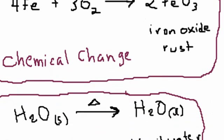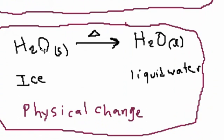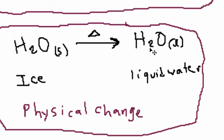Let me show you an example of a physical change. Here we have water in its solid state — ice — and this triangle means heat, so if we add heat to ice, the ice turns into liquid water. Notice that you have H₂O on the left-hand side and H₂O on the right-hand side. We haven't changed anything. The only thing that changed is the way water looks physically, but it's still water — that's called a physical change.